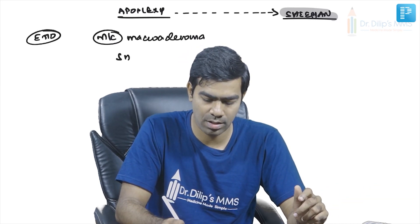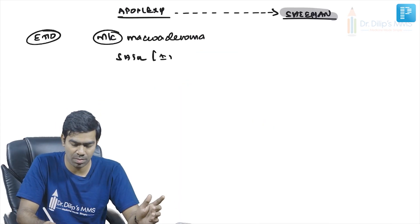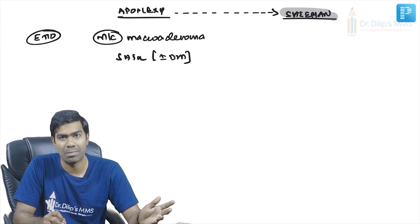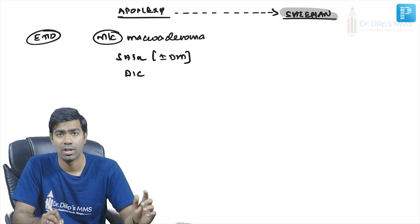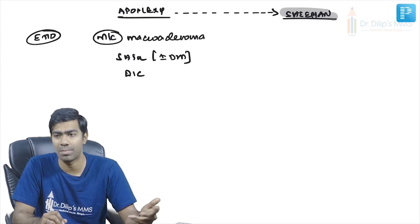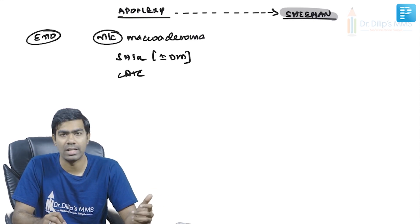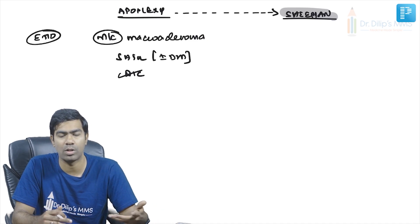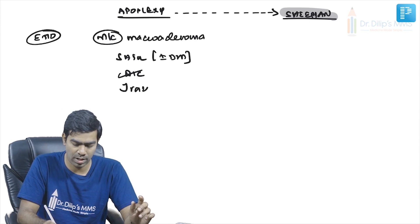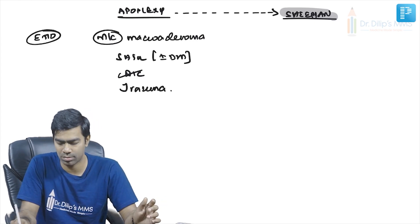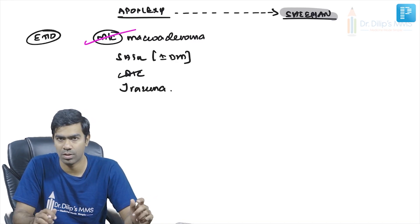Apoplexy can also result from uncontrolled hypertension causing bleeding into the pituitary, especially if the patient has associated diabetes mellitus. DIC — disseminated intravascular coagulation — from sepsis can also cause hemorrhage into the pituitary, similar to Waterhouse-Friderichsen syndrome in the adrenals. Rarely, traumatic causes may be involved, but the most common cause remains the macro adenoma causing hemorrhage or infarction.